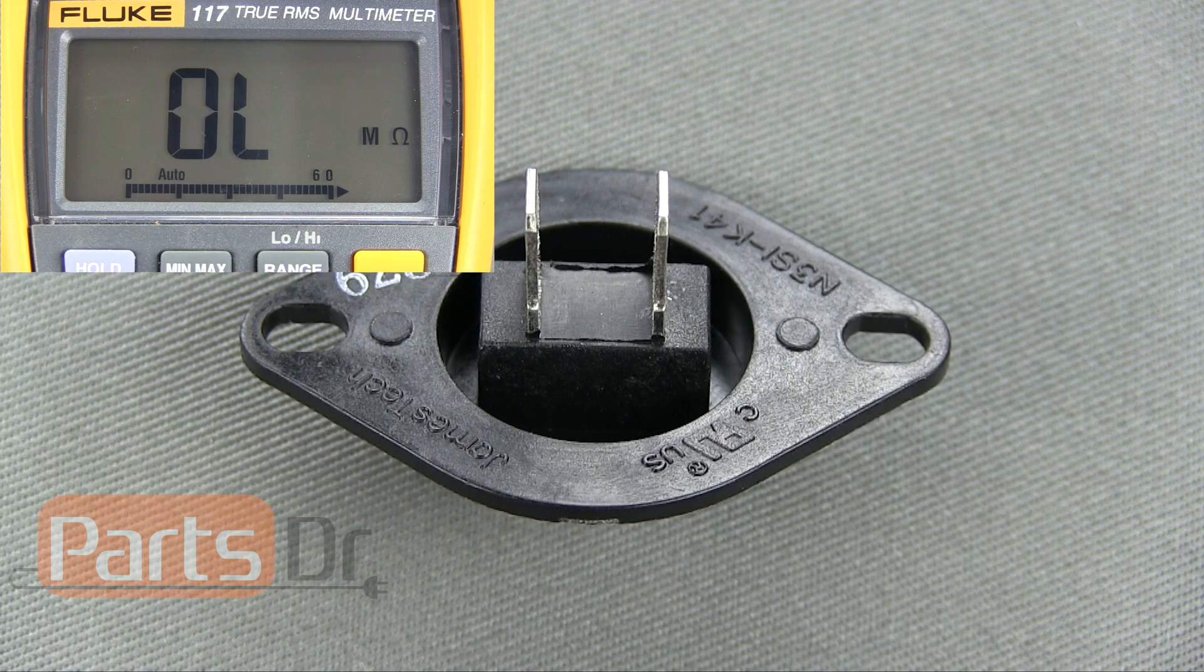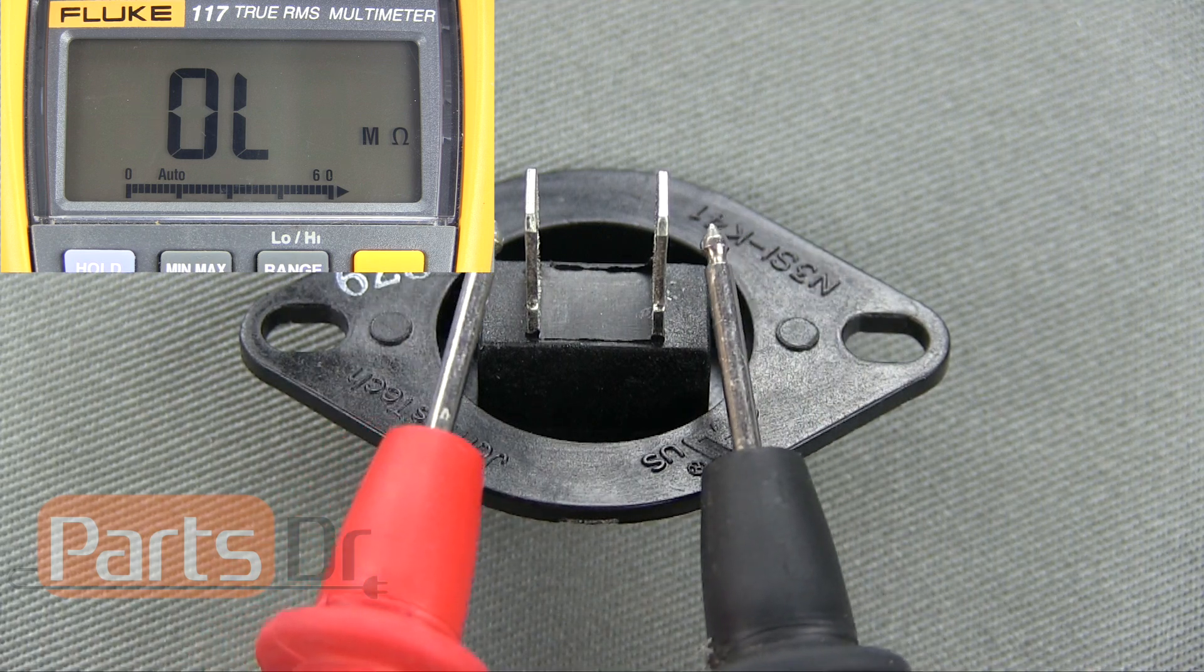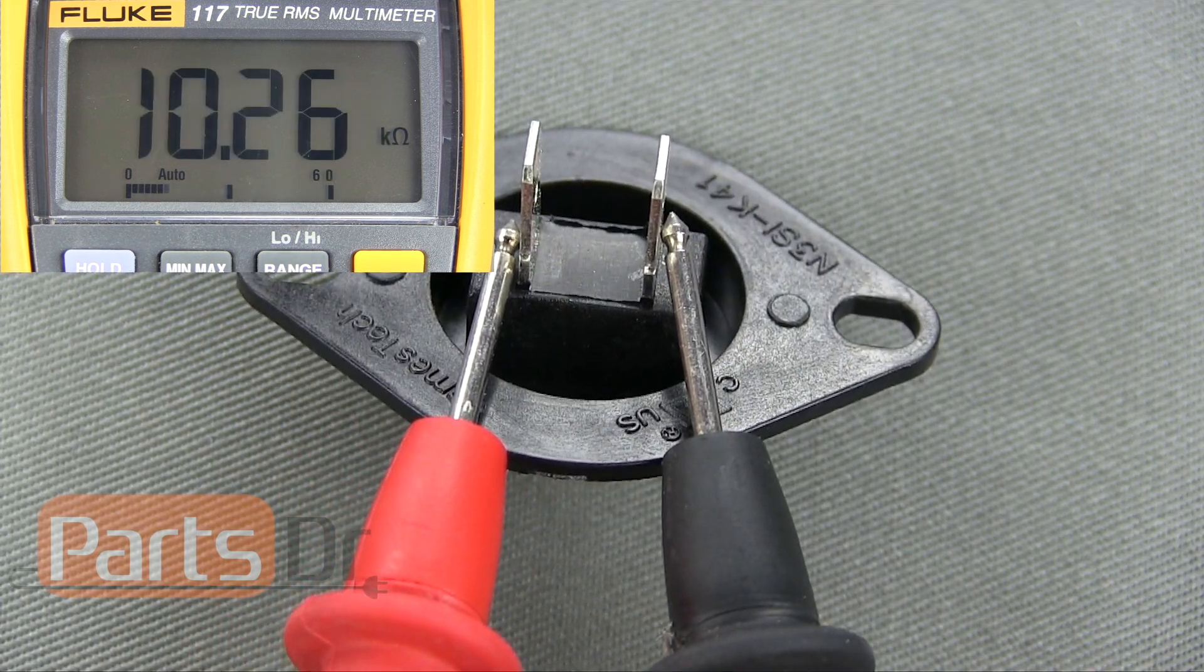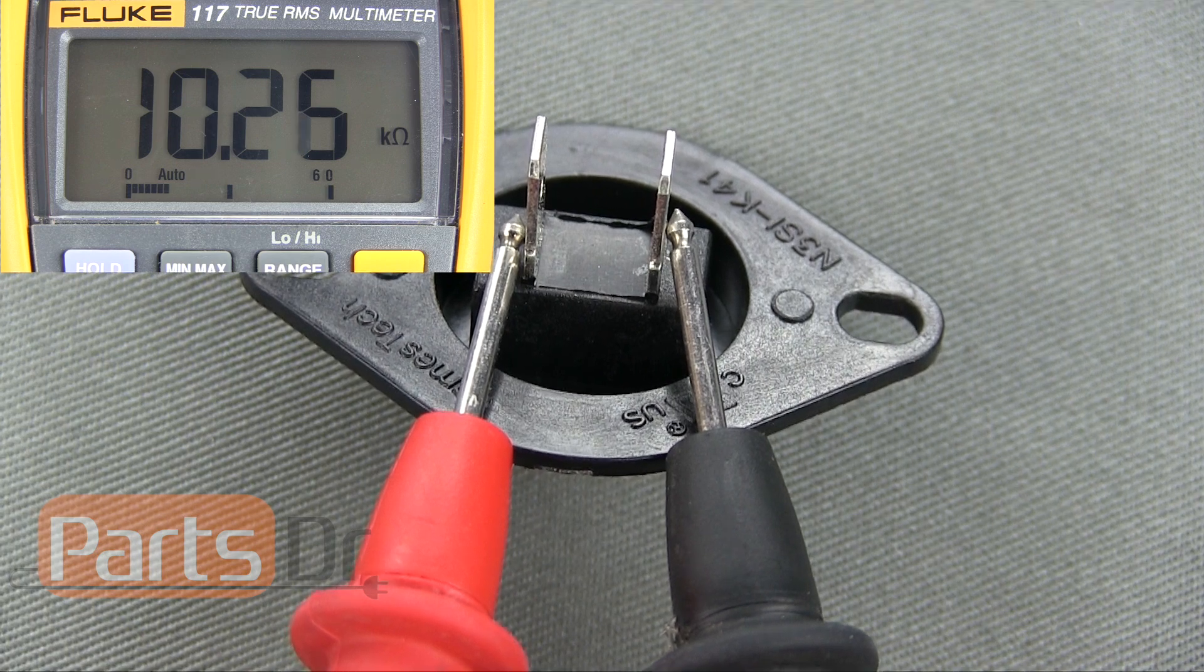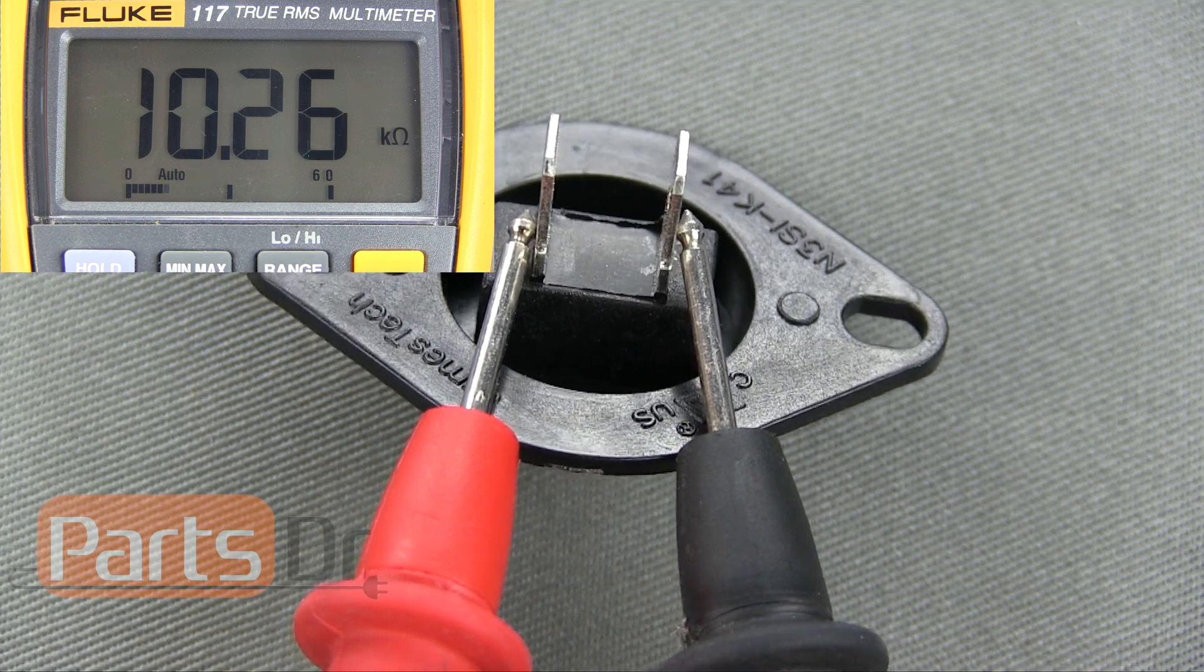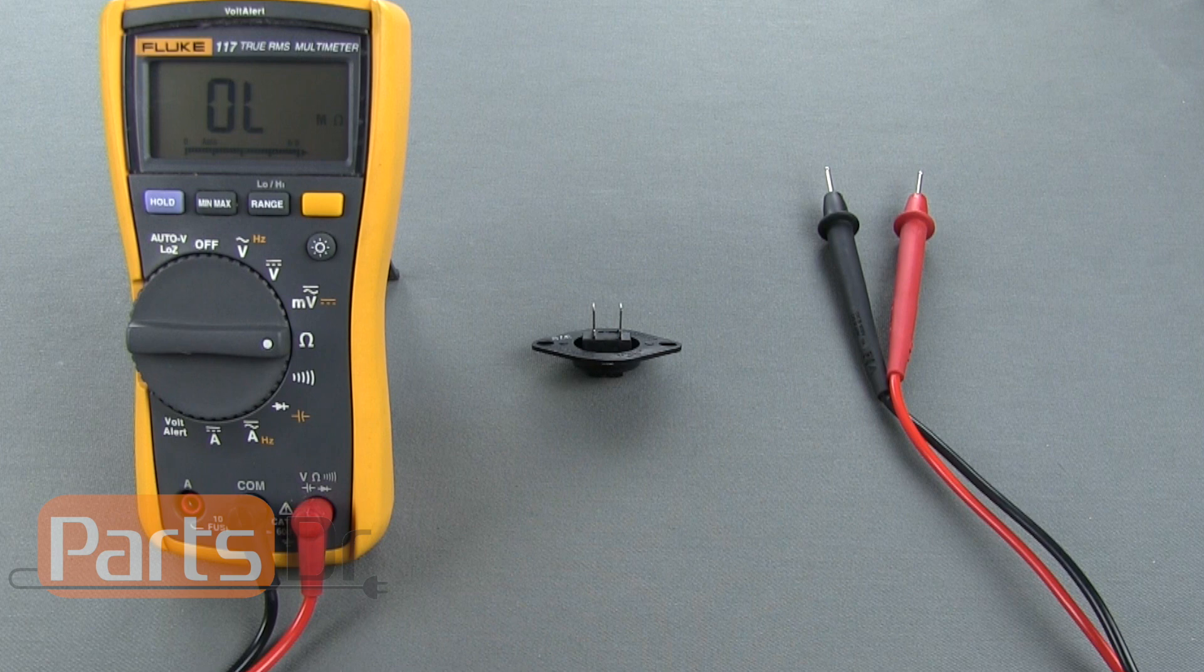Place one of each of the meter's probes on each of the thermistor's wire terminals. A good thermistor should have an ohm reading just over 10k ohms at room temperature. If your ohm reading is far higher or lower than this then you should replace the thermistor.